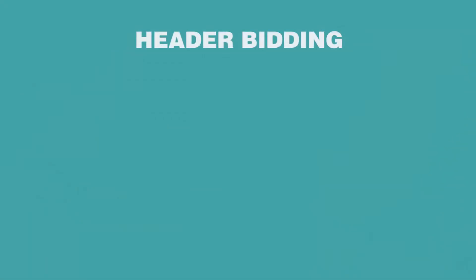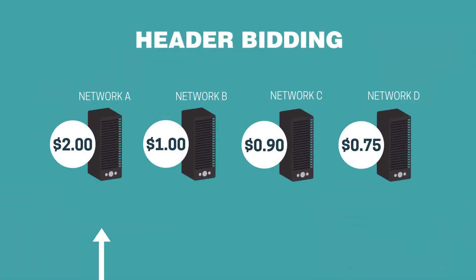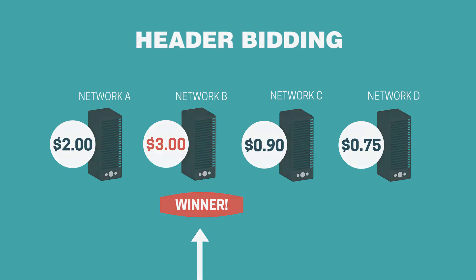So how is this all solved with header bidding? When a user first gets to your site, we run a real-time auction. We send a lightweight JavaScript call to all of our different ad exchanges we work with, and we figure out what that exact user for that impression is worth. Network A may have averaged $2 in the past and network B may have averaged $1 in the past, but if network B is willing to pay more in this case, they're going to win that impression. It's really optimizing for every single impression with header bidding.